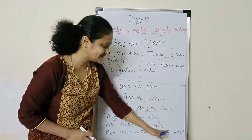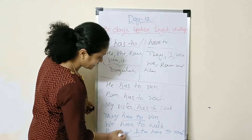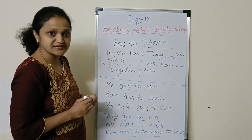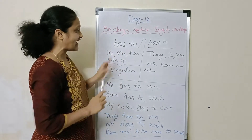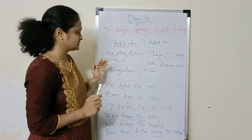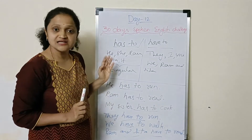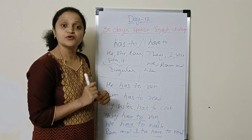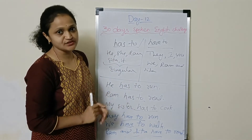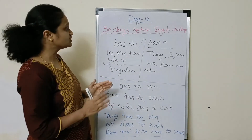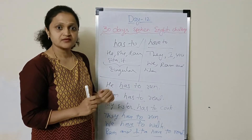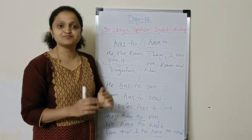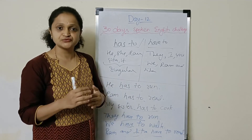Let me repeat the concept. 'Has to' is used with singular subjects. 'Have to' is used with plural subjects. Today we will practice 'have to' and 'has to' sentences.